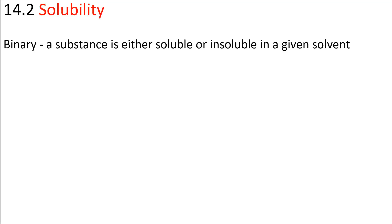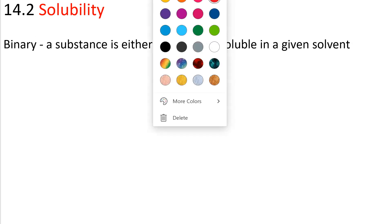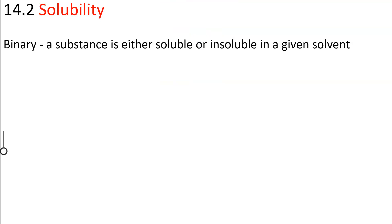Solubility. There are two different contexts for considering solubility. There's the binary one, where a substance is either soluble or insoluble in a given solvent. For a substance to be soluble, it has to have compatible intermolecular forces, so compatible IMF, also known as AF, attractive forces.